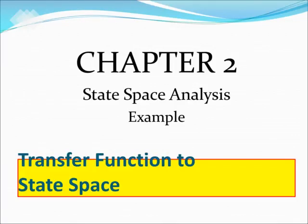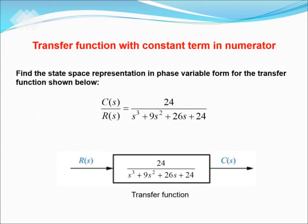Assalamualaikum warahmatullahi wabarakatuh. Now we are going to look at an example of how to get a state space equation out of a transfer function. This example shows a transfer function with a constant term in the numerator. The question wants us to find the state space representation in phase variable form for the transfer function shown below. This is a transfer function with a constant term in the numerator.